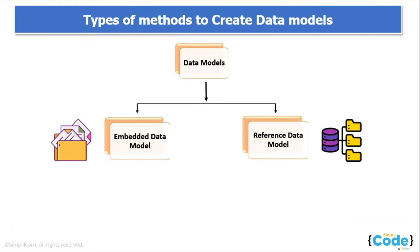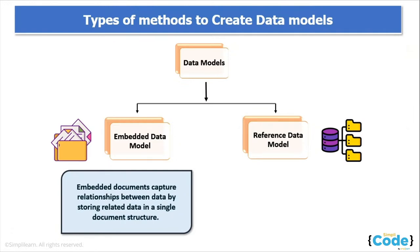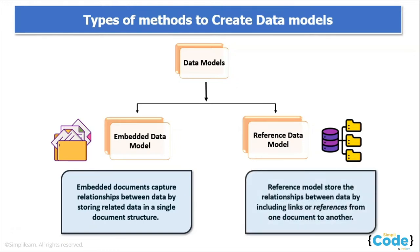Let us now discuss the types of methods to create data models. Once we are confirmed on what data model and relationship we need, we need a method to create the data model. There are two different approaches that store data in documents. The first is the embedded data model — in the embedded data model, you can embed data in a single document or structure in MongoDB. It is also referred to as a denormalized data model. It leverages the full potential of MongoDB's rich document and uses one-to-one or one-to-many relationships.